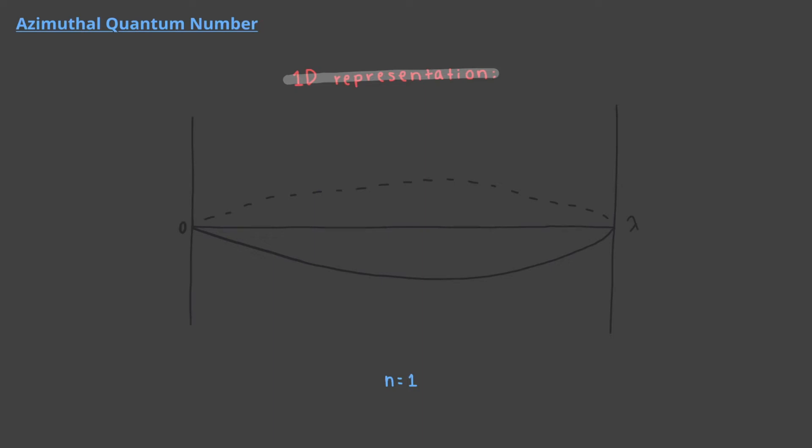Adding loops to an electron wave changes the wave and the resulting wave is higher in energy. The principal quantum number, n, is the number of loops an electron wave has.